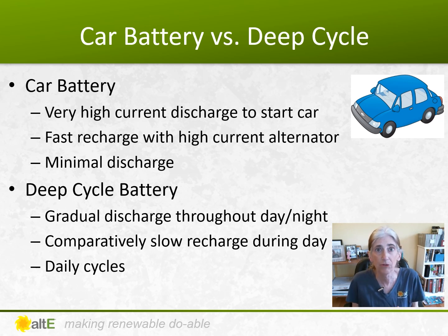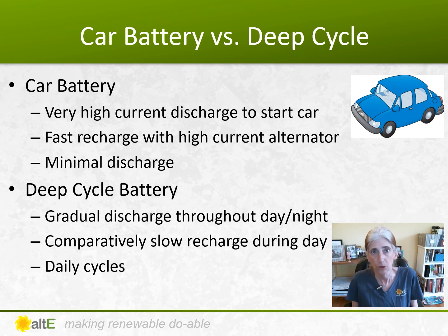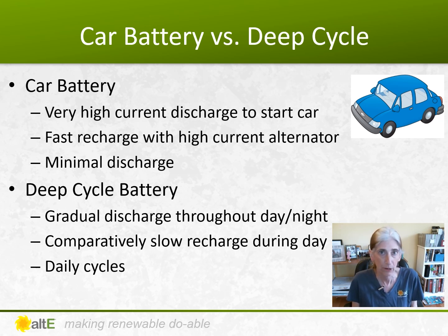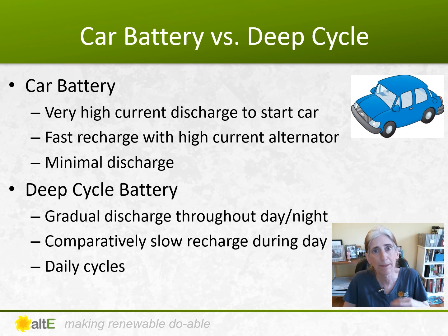A deep cycle battery is really designed to do that every day — daily cycles. Sometimes you'll hear people say, 'I'm just going to use a car battery in my solar system.' Well, if you do that, you're going to end up with a dead battery in probably less than a year, because it's just not designed to do that. So you really want to make sure you get a deep cycle battery for a solar system.